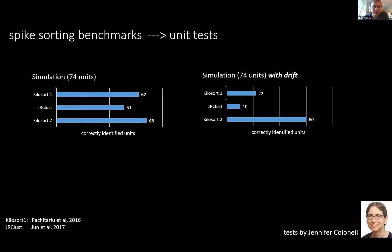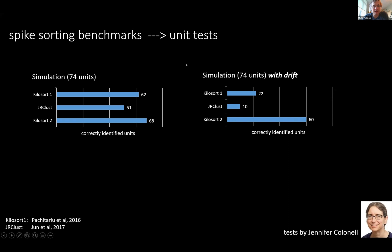Some of the other essential parts of the package are things like spike sorting benchmarks. Here's a simulation by Jennifer Colonell from a few years ago that tells us essentially whether Kilosort 2 works better than Kilosort 1 or other algorithms. In this particular case it did find more units correctly. That helps tell us not just that the algorithm works, but it can actually form the basis for unit tests to make sure that as we develop further, we keep progressing and don't regress on some of these benchmarks.